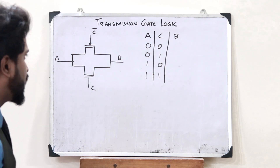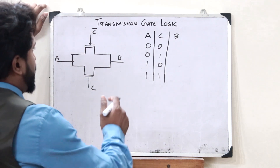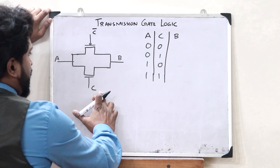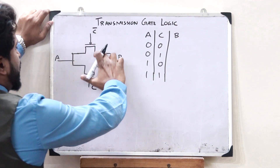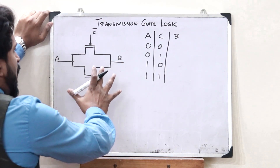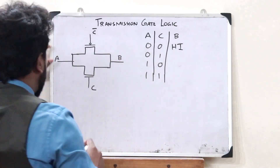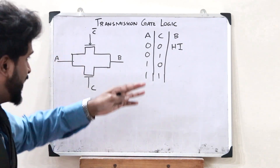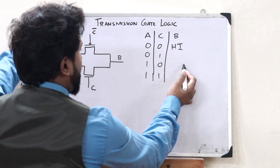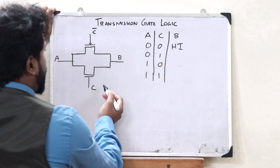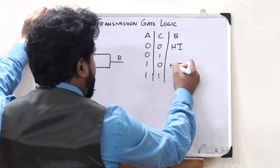When the control signal C is 0, C complement becomes 1. When C is 0 at the NMOS gate, that transistor is off. When C complement is 1 at the PMOS gate, that transistor is also off. Therefore, this circuit goes into a high impedance state — whatever we give as input, we get nothing at the output. Similarly, for the input combination where C is 0, both transistors are off and the output is again high impedance.